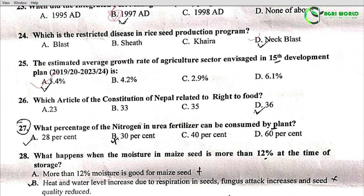Question 26: Which article of the Constitution of Nepal is related to the right to food? Options: Article 23, 33, 35, or 36. Article 36 is related to the right to food.